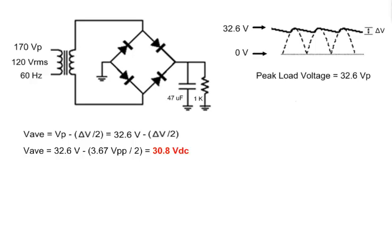Replacing delta-v with 3.67 volts gives us the average load voltage of 30.8 volts DC.